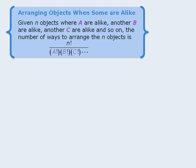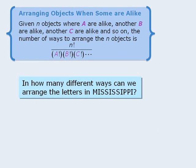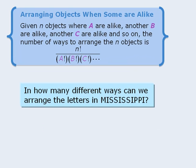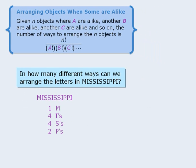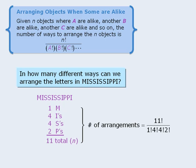Now let's apply our rule to a very popular question. Here we want to arrange the letters in the word Mississippi. Since we have several identical letters here, we can apply our rule. So in the word Mississippi, we have one M, four I's, four S's, and two P's for a total of 11 letters. Now to calculate the number of arrangements, we will plug the numbers into our formula to get 34,650.